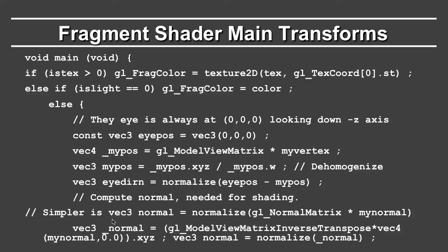Now I come to the normal. You can actually use gl_NormalMatrix, but I want to show something a bit more complicated. Remember that the normal transform is the model view matrix with the inverse transpose applied. So I compute model view inverse transpose times vec4 of the normal with a W coordinate of 0. After that I take only the x, y, z values — the upper 3x3 effectively. The reason is the inverse transpose is a full 4x4, but I'm only interested in the upper 3x3 and x,y,z for the normal. gl_NormalMatrix does that automatically. Finally I just renormalize the normal.